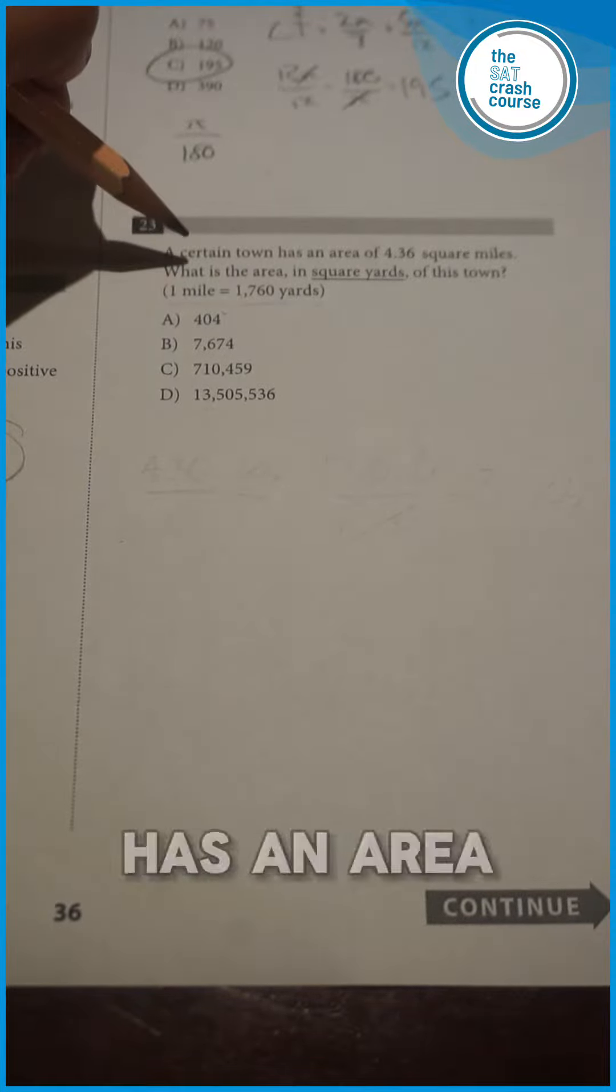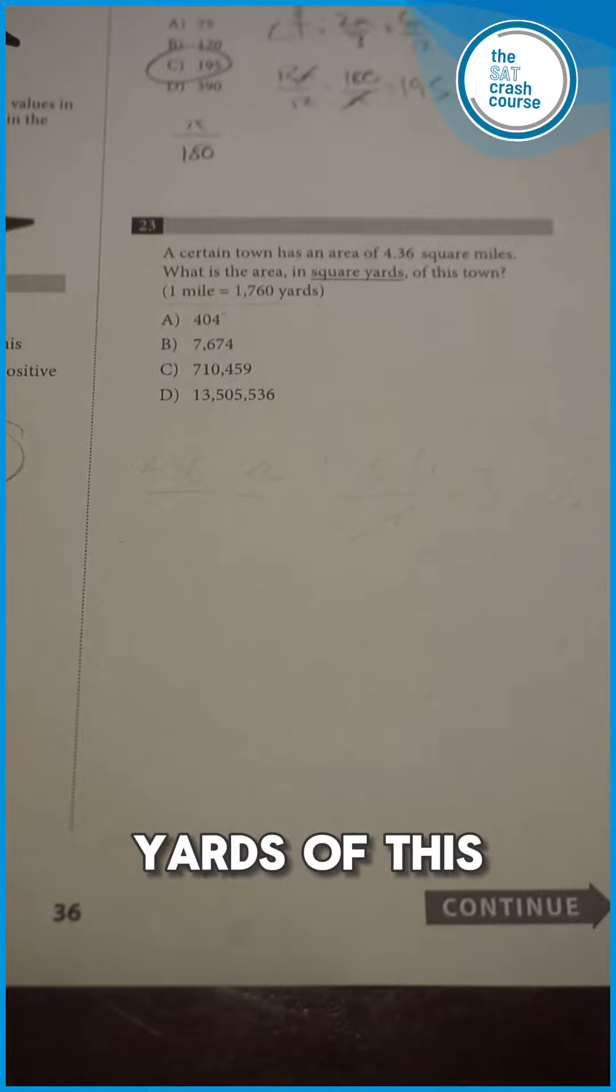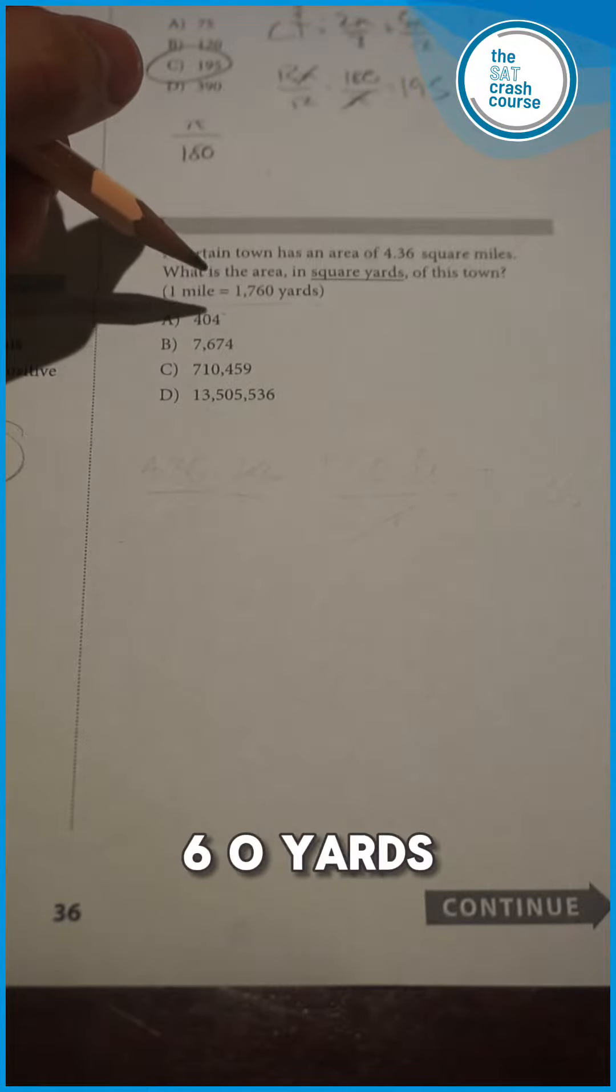Question 23. A certain town has an area of 4.36 square miles. What is the area in square yards of this town where one mile equals 1,760 yards?